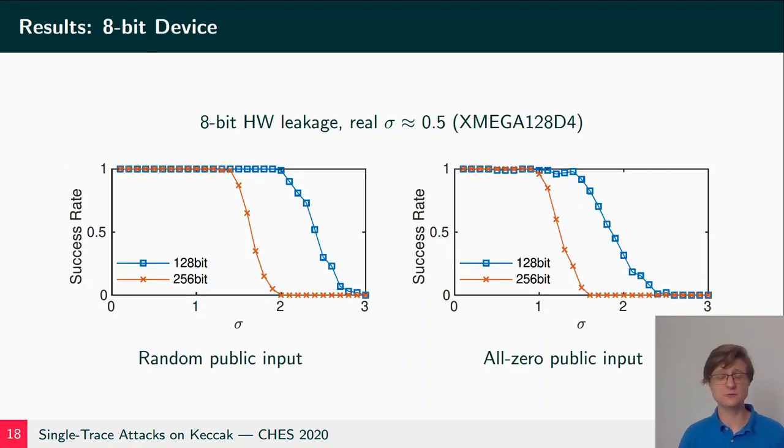Now we evaluated our attack for multiple concrete scenarios. And this is the result for simulated leakage on an 8-bit device. As it turns out, attacks which want to recover a 128-bit key work a lot better, with higher noise levels than those with a 256-bit key. We can also see that attacks in the random public input scenario work better than in the all-zero public input scenario. Just to give a bit of context, we evaluated the real noise level on an 8-bit device and we found it to be roughly 0.5, which is well within the noise levels that we can handle with our attack with quite a lot of margin. So the attack works perfectly on 8-bit device in all scenarios.